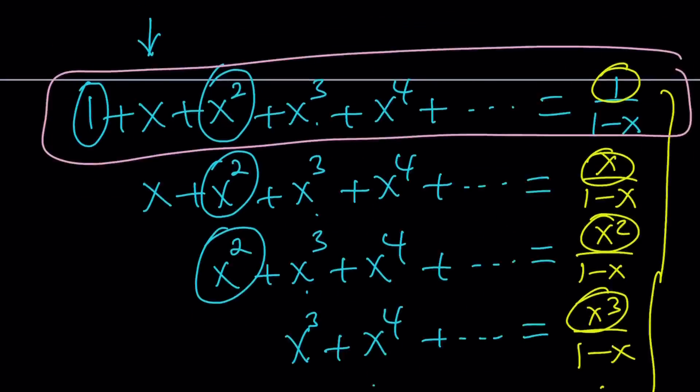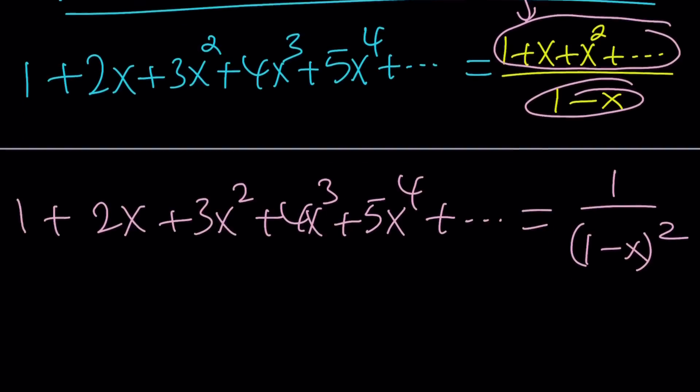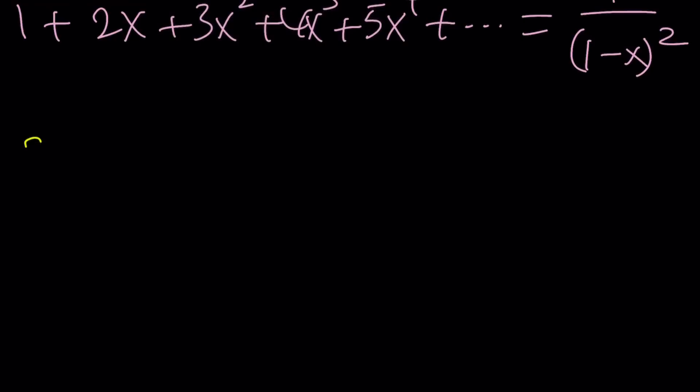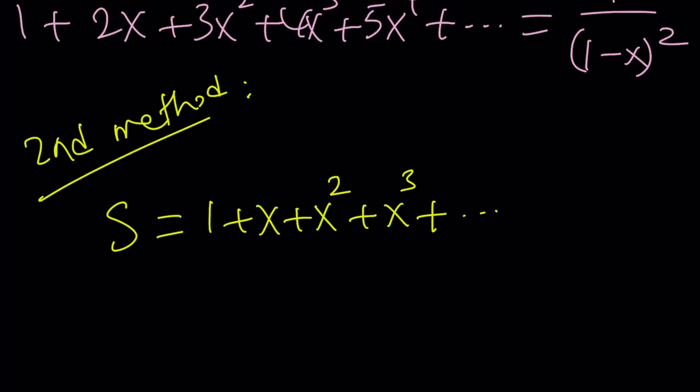This is the first method. Let's go ahead and take a look at the second method. If you are familiar with calculus, you're probably going to know the second method. But let's see. So, suppose this sum is s. 1 plus x plus x squared plus x cubed dot dot dot. And we know that this is equal to 1 over 1 minus x. So, s is equal to 1 over 1 minus x. What am I trying to find?